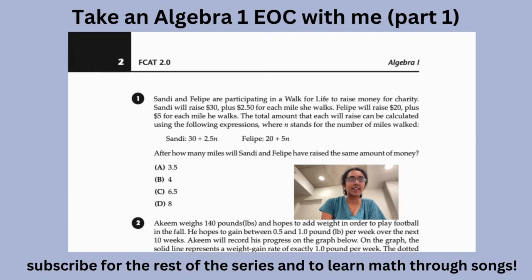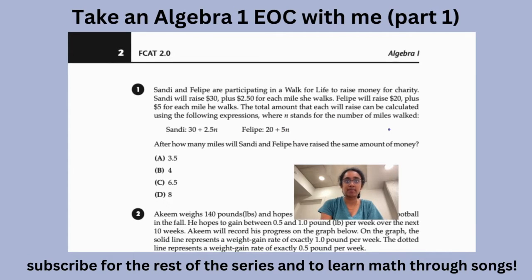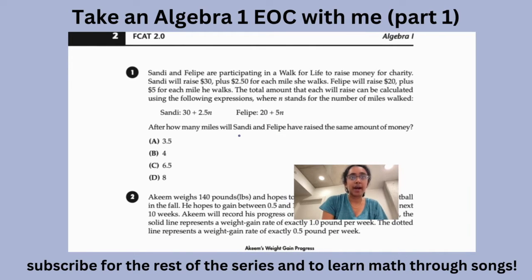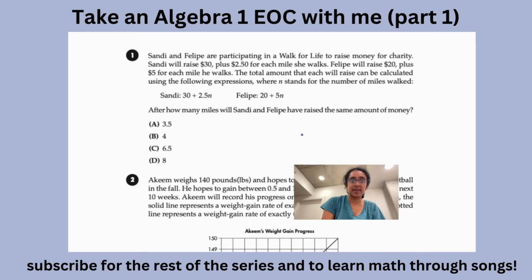So the first question we got is: Sandy and Philippe are participating in a Walk for Life to raise money for charity. Sandy will raise $30 plus $2.50 for each mile she walks. Philippe will raise $20 plus $5 for each mile he walks. The total amount each will raise can be calculated using the following expressions where n stands for the number of miles walked. Sandy is 30 plus 2.5n. Philippe is 20 plus 5n. After how many miles will Sandy and Philippe have raised the same amount of money?